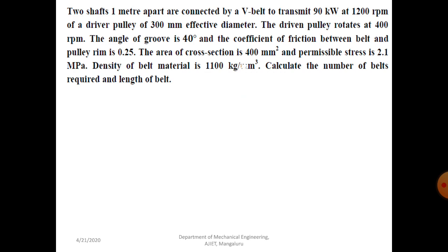Here we have to calculate the number of belts. The cross-section of the belt in V-belt is always trapezoidal, so we cannot use the same formula as flat belt. In flat belt the cross-section is rectangular, so area formula is width into thickness. But in trapezoidal we have to use the area formula for a trapezoidal cross-section.